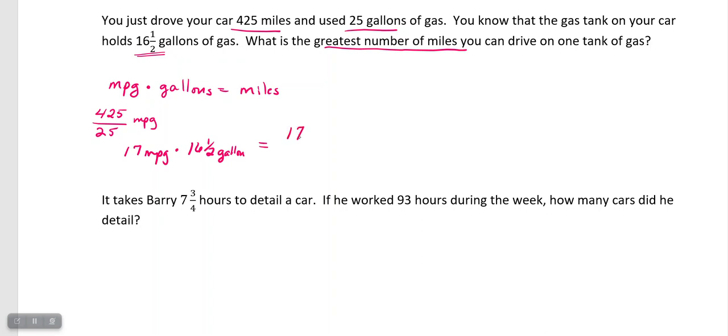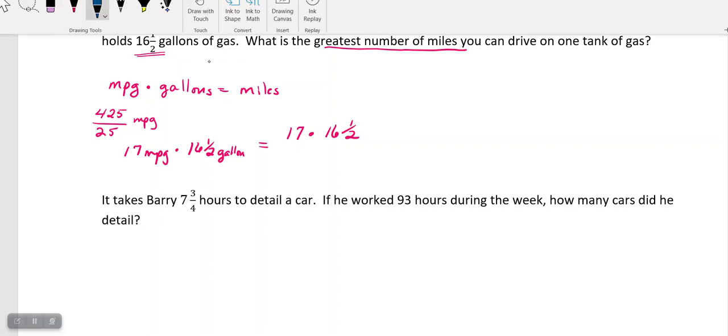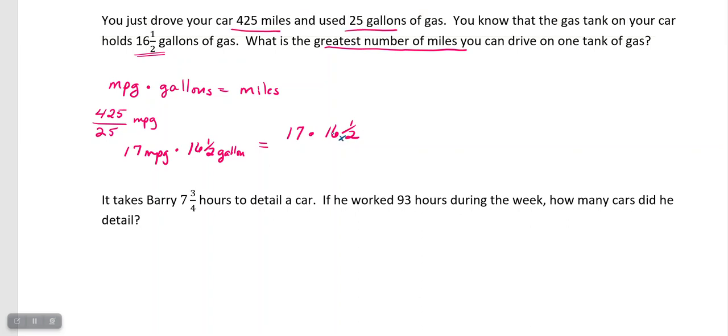But the thing is, remember that we cannot multiply by a mixed number. So we have to convert our mixed number to an improper fraction. So I'm going to do 2 times 16, which is 32 plus 1, which gives me 33, 33 over 2. I also have to take and write my 17, my whole number as an improper fraction, which would make it 17 over 1.